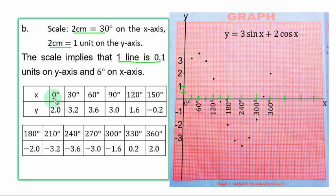When s is 0 degrees, y is 2. You plot that point directly on the y axis. When s is 30, y is 3.2. So after 3, you count 2 lines upward because 1 line is 0.1. You have 3.2 here against 30. When s is 60, y is 3.6. You count 6 lines after 3, you have 3.6 against 60. When s is 90, y is 3. This is 3 against 90.